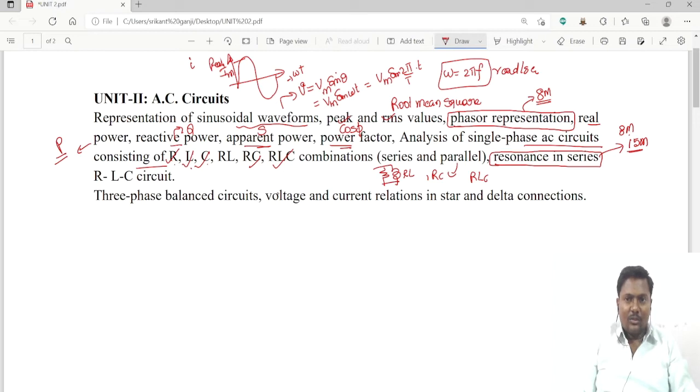We can expect questions on resonance topic and three-phase balanced circuits. Three-phase balanced circuits means we are going for two connections - one is star connection and delta connection. In this we will derive the relationship between the voltages and currents.